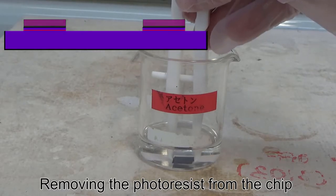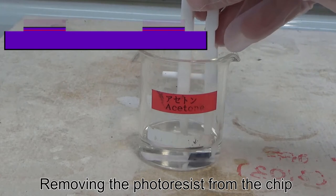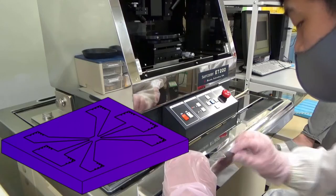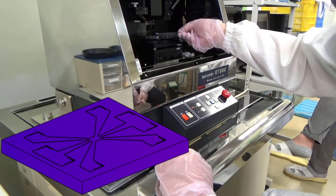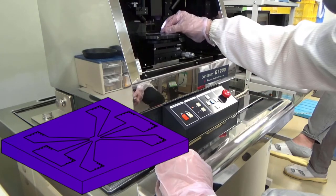After the etching step, we wash away the photoresist by dissolving it in acetone. Next, we measure the height profile of the chip. This is to determine the depth of the etching performed.